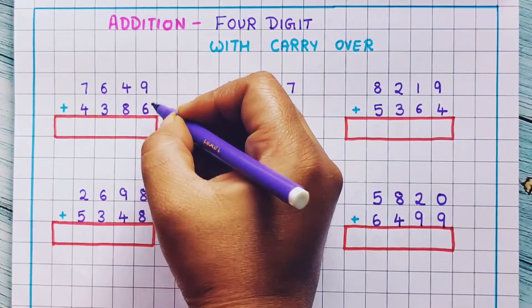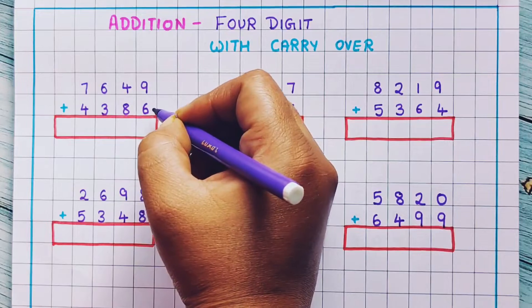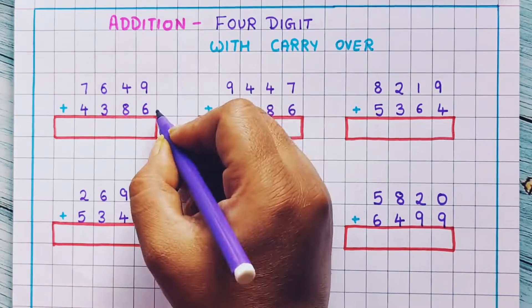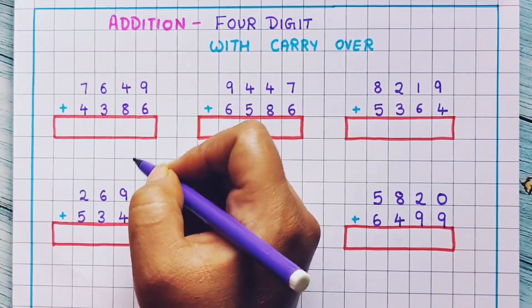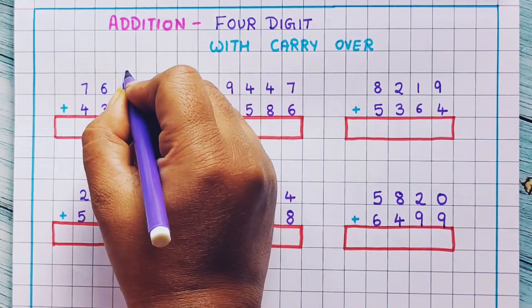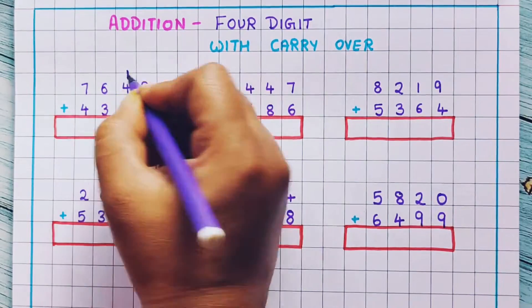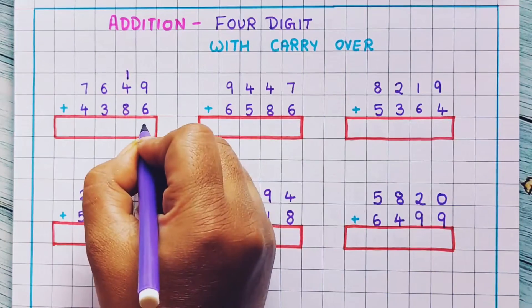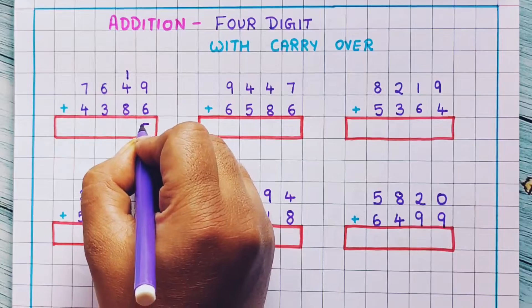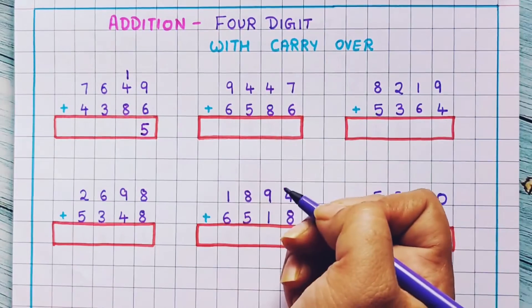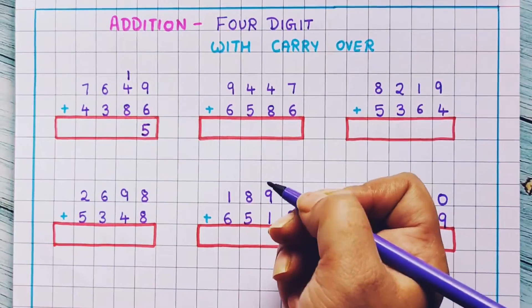9 plus 6. 9 plus 6 is 15. So how are we going to write this 15? The 1 we are going to write as a carryover and the 5 we are going to write down here.